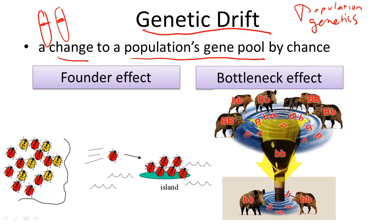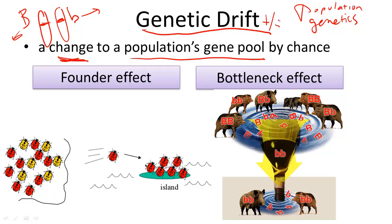Genetic drift, or this random change in allele frequency, occurs because, by the law of independent assortment, alleles are sorted independently of one another during meiosis, and therefore passed on to different offspring by chance. Genetic drift can be either good or bad for the population, and is one way that a population can evolve — either becoming a new species or becoming extinct.